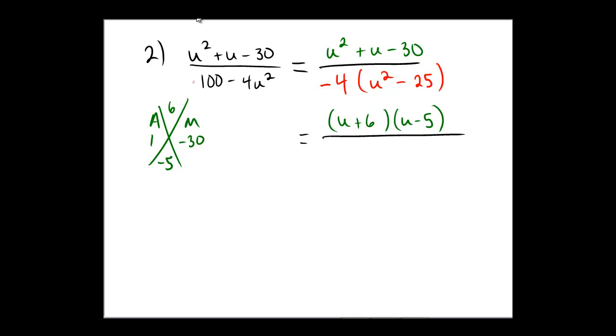On the other hand, in the denominator, negative 4 hanging out by itself. And instead of using the x method on this one, I'm going to recognize that this is a difference of squares. It's a perfect square minus a perfect square. So I can use my shortcut, my understanding of this formula, to say that this must be (u + 5)(u - 5). Because this always happens with difference of squares.